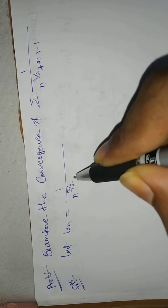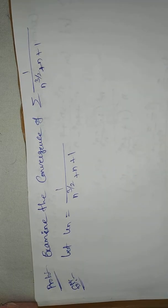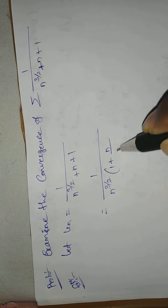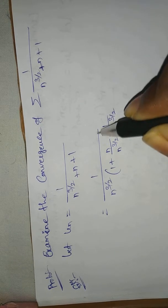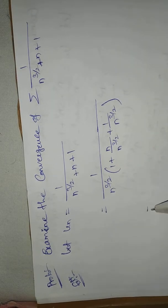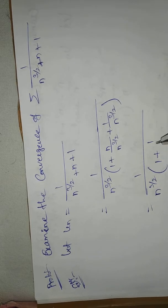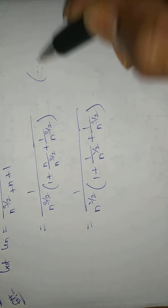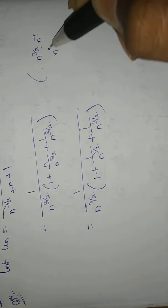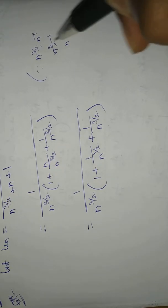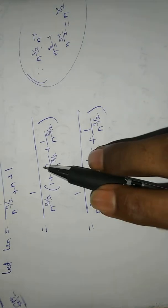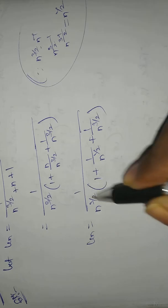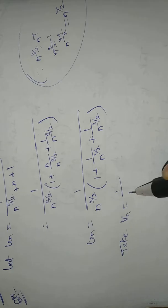Let uₙ = 1 / (n^(3/2) + n + 1). Taking n^(3/2) as common in the denominator: uₙ = (1/n^(3/2)) · 1 / (1 + n/n^(3/2) + 1/n^(3/2)) = (1/n^(3/2)) · 1 / (1 + 1/n^(1/2) + 1/n^(3/2)). Take vₙ = 1/n^(3/2).